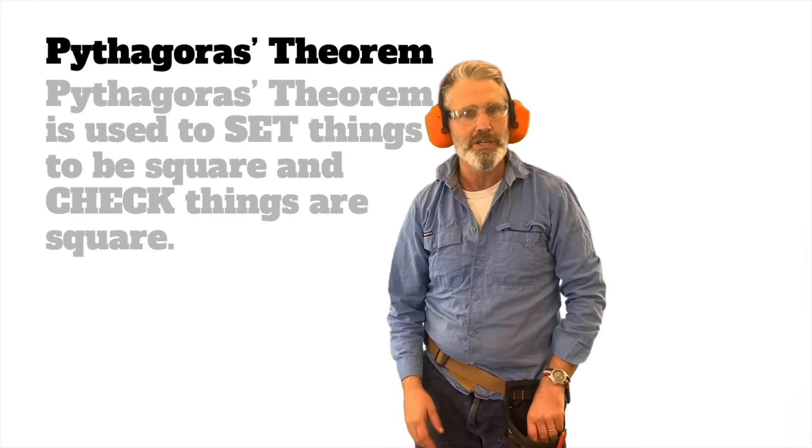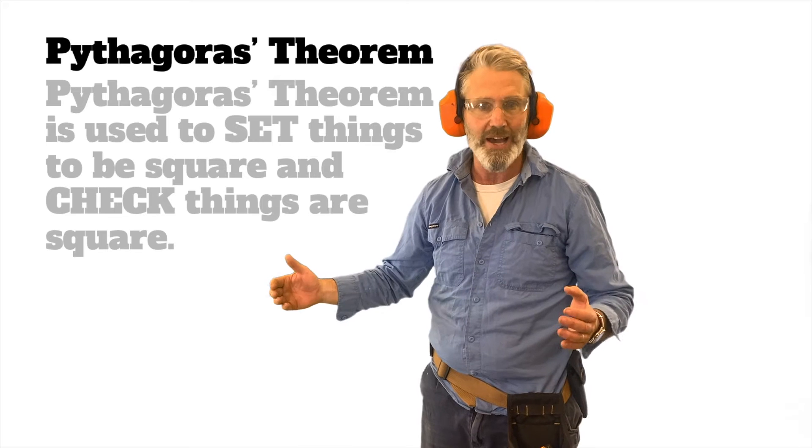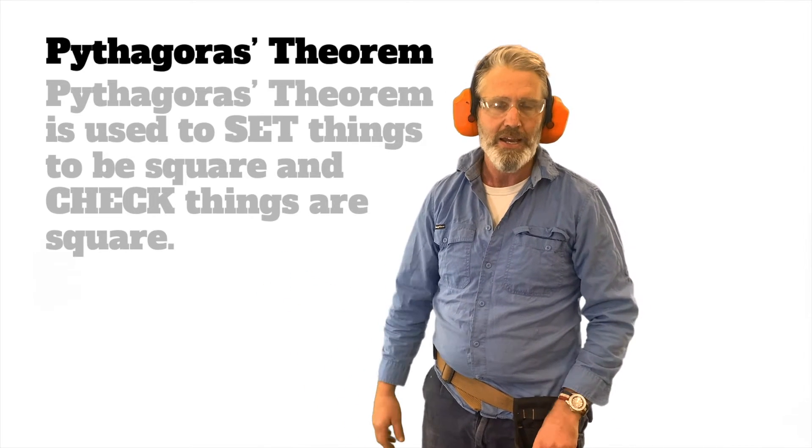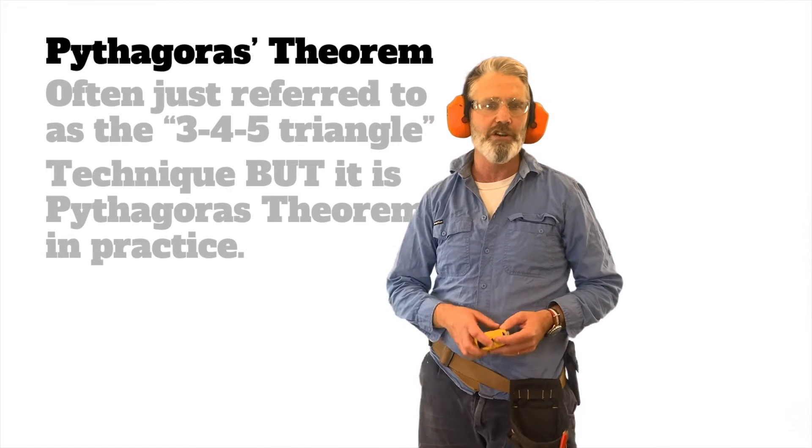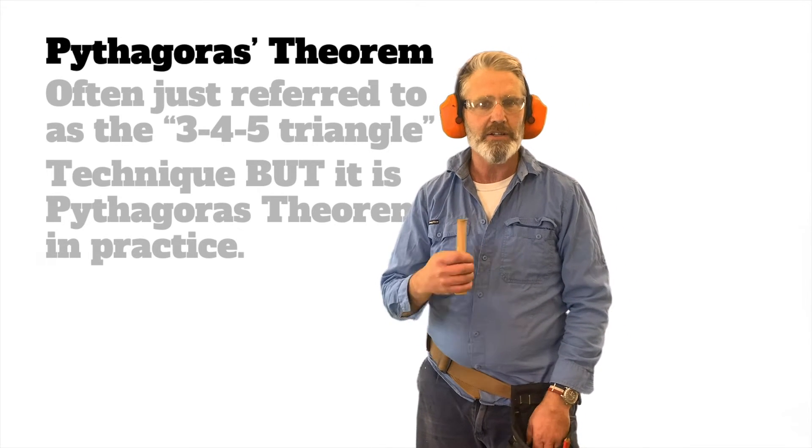Builders will actually use Pythagoras Theorem to work out if something is really large and needs to be square. Most builders will talk about it as a 3-4-5 triangle, but it is Pythagoras Theorem that they do.